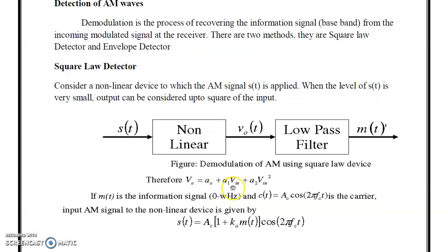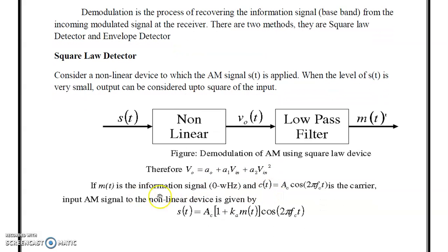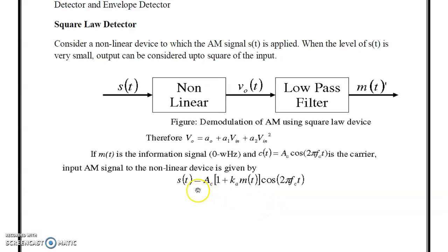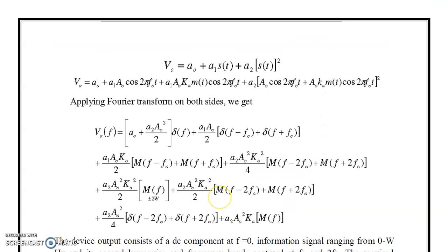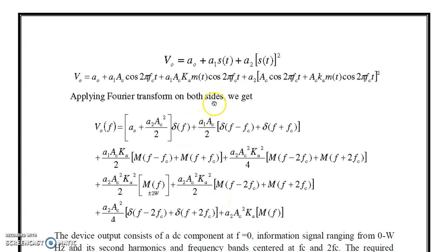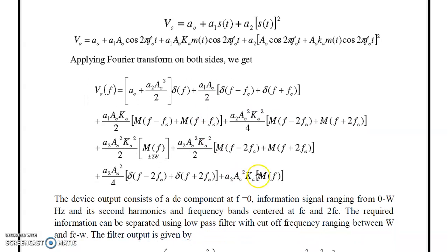For the square law detector, consider a non-linear device to which the AM signal S(t) is applied. Since the level of S(t) is very small, the output can be considered up to the square of the input. So the chain is: S(t) → non-linear device → low-pass filter → m(t). The output is V0 = A0 + A1·Vin + A2·Vin². Applying the Fourier transform to both sides after substituting S(t) into the equation, we get spectral components at f = 0, fc, and 2fc including the message signal and its harmonics.